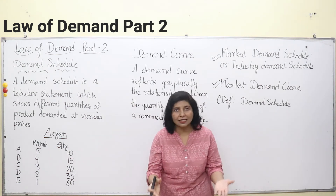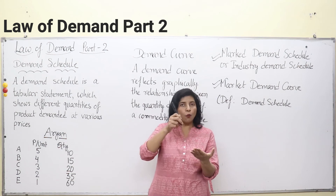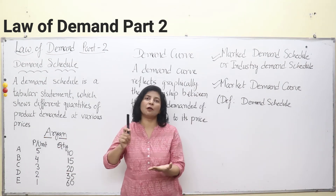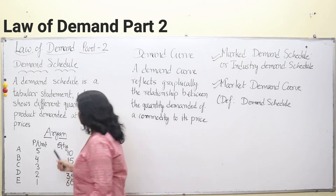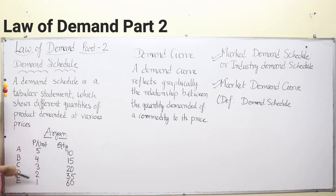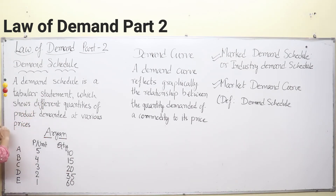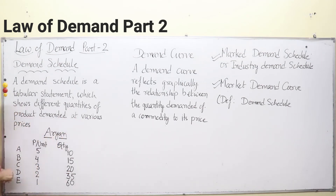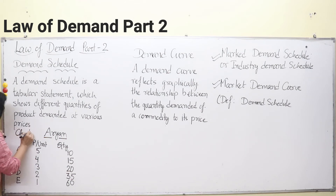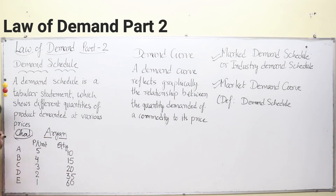A demand schedule is a statement in tabular form showing what quantities you will purchase at different prices for the same commodity. Here I've taken one student, Arian, with combinations A, B, C, D, and E, showing different quantities of a product — suppose chocolates — demanded at various price conditions.